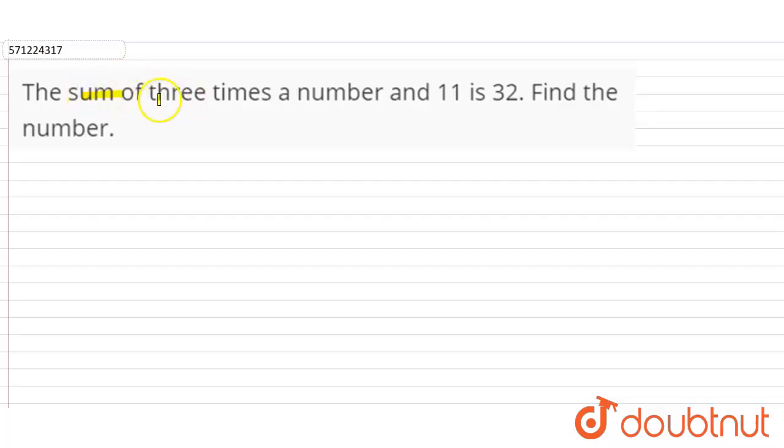the sum of three times a number and 11 is 32. Find the number. Whatever we have to find in the question, we have to take that unknown number be x. So let the number be x.